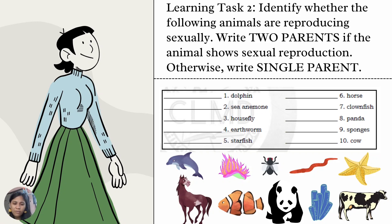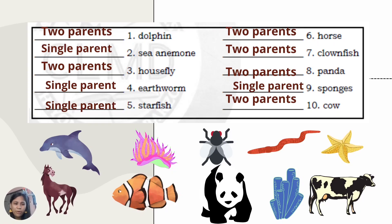Number 6: Horse. Number 7: Clownfish. Number 8: Panda. Number 9: Sponges. Number 10: Cow. And these are the correct answers. Number 1: 2 parents. Number 2: single parent. Number 3: 2 parents. Number 4: single parent. Number 5: single parent. Number 6: 2 parents. Number 7: 2 parents. Number 8: 2 parents. Number 9: single parent. Number 10: 2 parents.